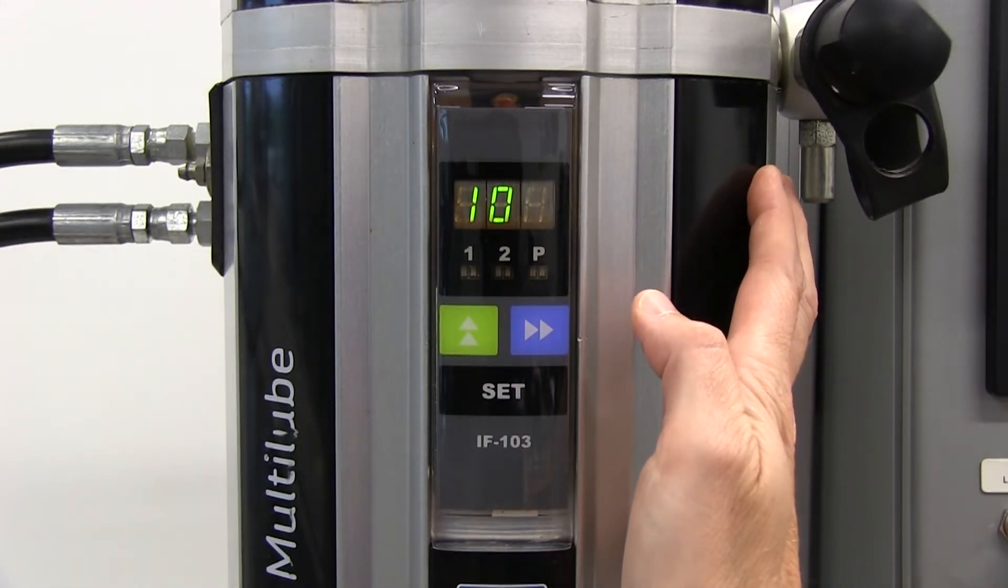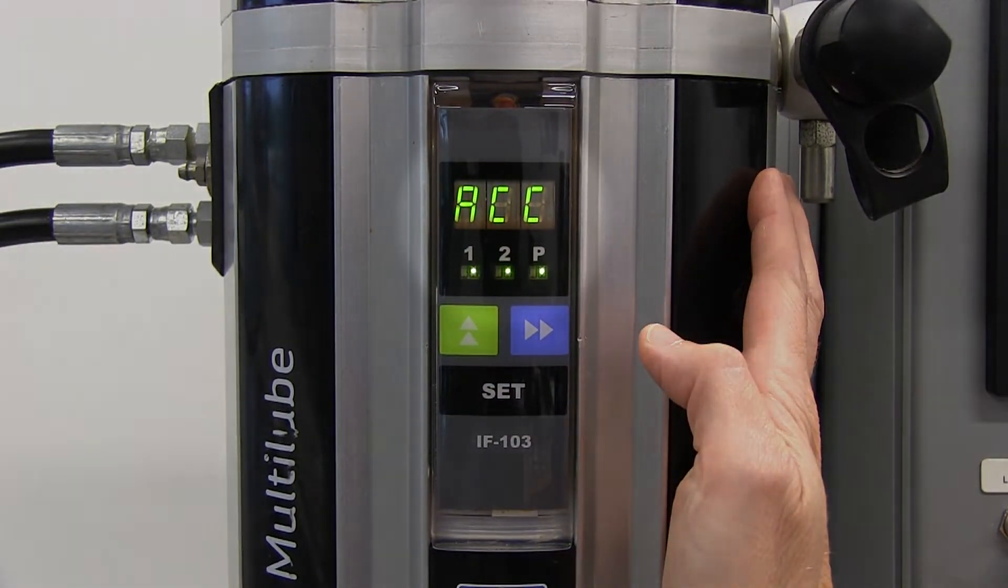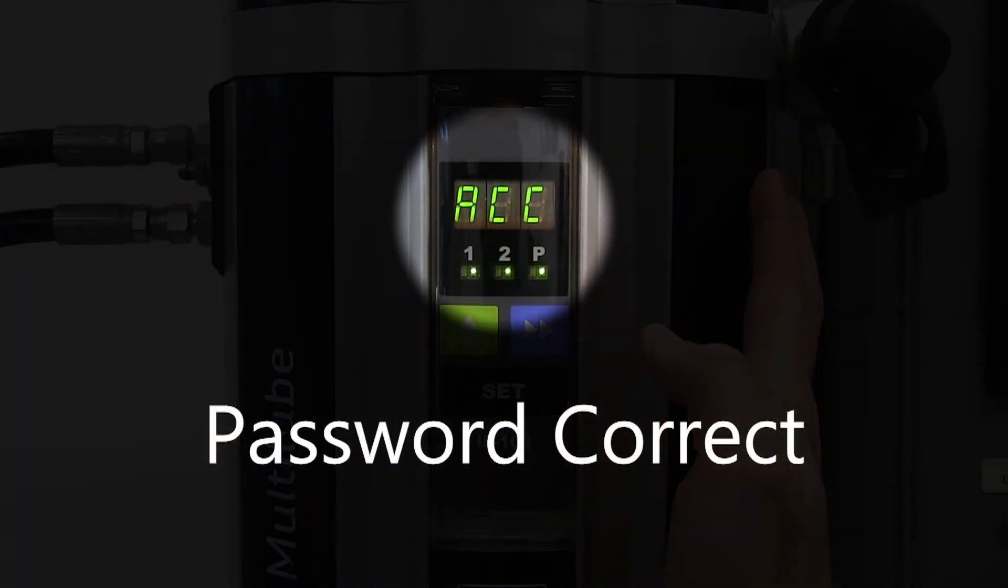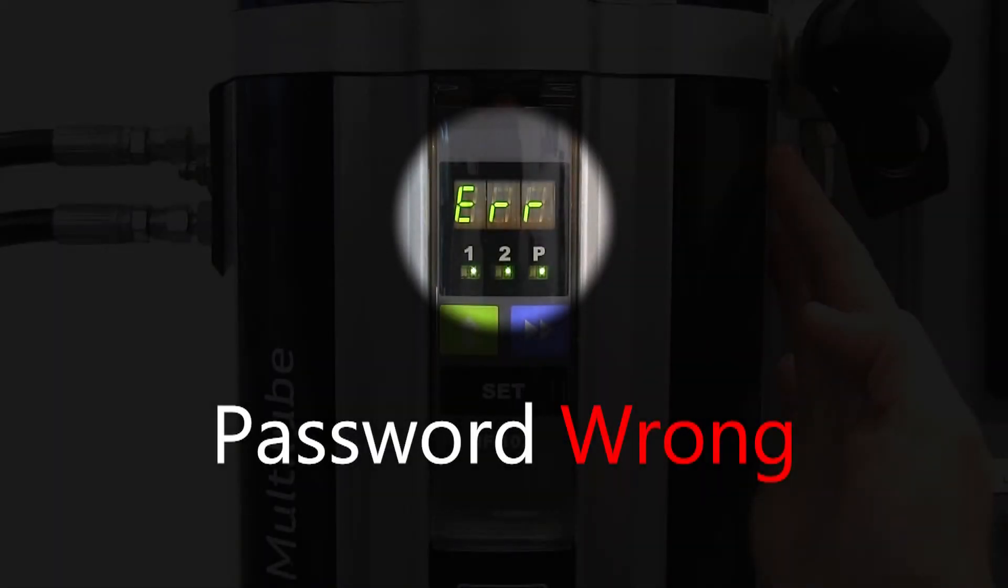Then press set to submit the password. The control unit displays ACC if the password is correct and accepted. The control unit displays ERR if the password is incorrect. If you enter the password incorrectly, God save you.